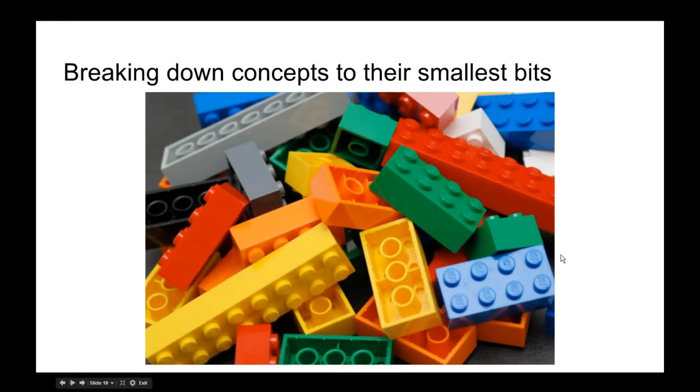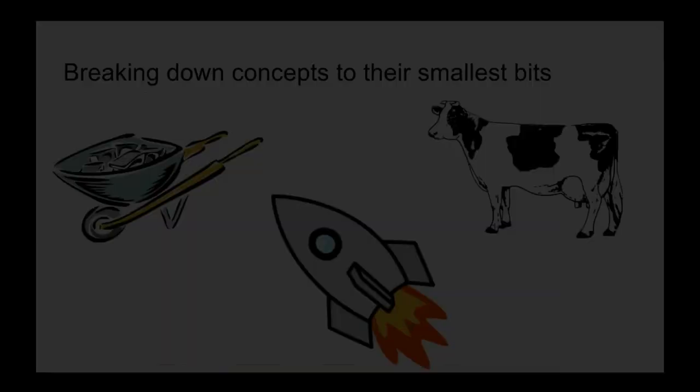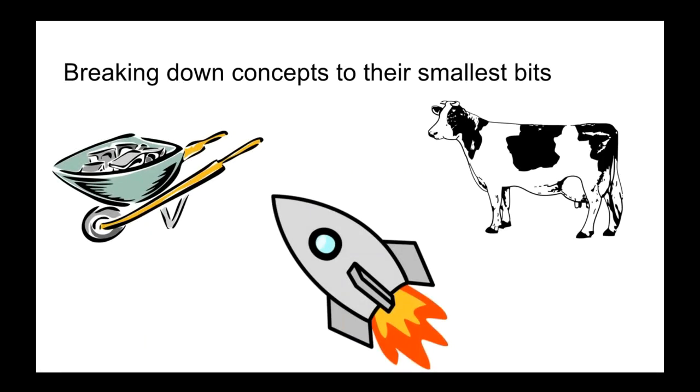So how do we get to these attributes? How do we pick? Like I just said, things get really complicated. The first thing we want to do is break down our subject, the thing we want to represent from the real or fictional world in our game world, into its smallest bits. We're going to have three examples here, and actually in this one I welcome everybody to go ahead and turn your mic on and I'm going to ask a few questions. So we have here a wheelbarrow, a cow, and a rocket ship, a cartoon rocket ship.